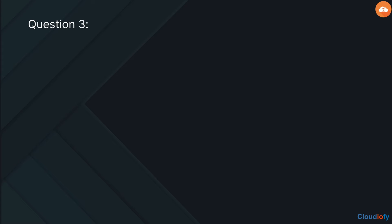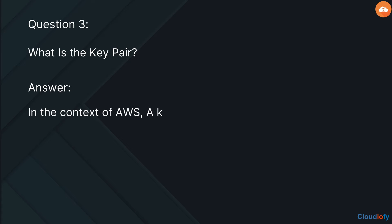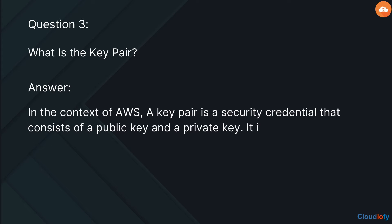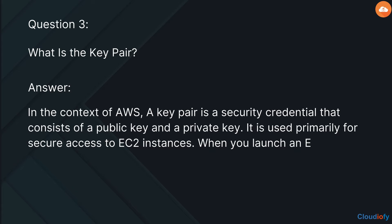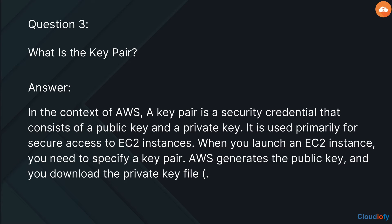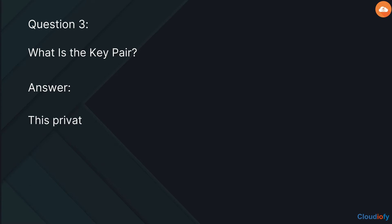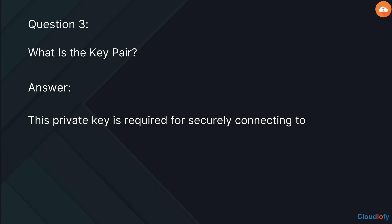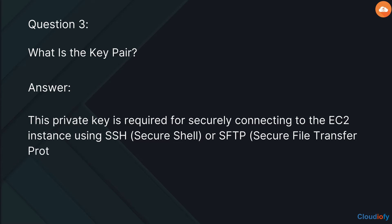The next question is: what is a key pair? In the context of AWS, a key pair is a security credential that consists of a public key and a private key. It is used primarily for secure access to EC2 instances. When you launch an EC2 instance, you need to specify a key pair. AWS generates the public key and you download the private key file in .pem format to your local machine. This private key is required for securely connecting to the EC2 instance using SSH (Secure Shell) or SFTP (Secure File Transfer Protocol).